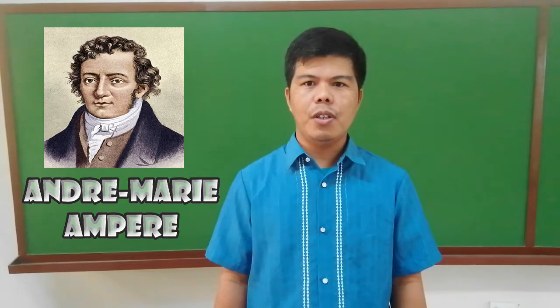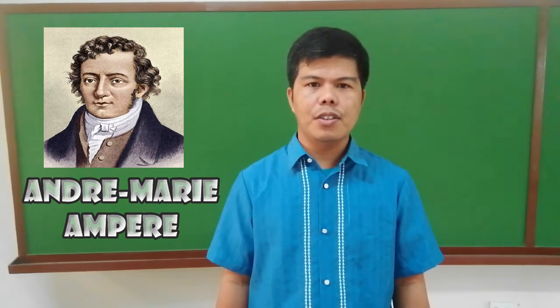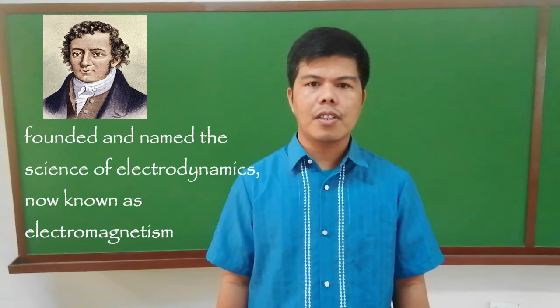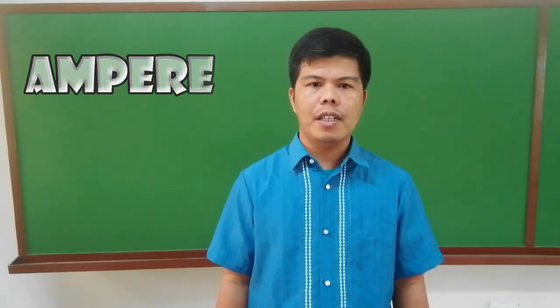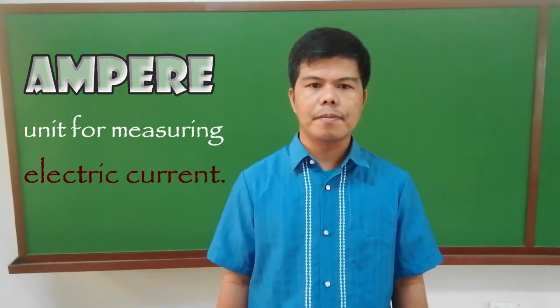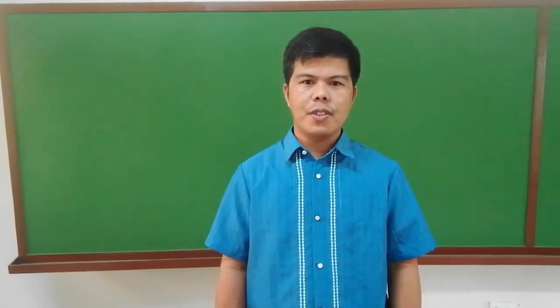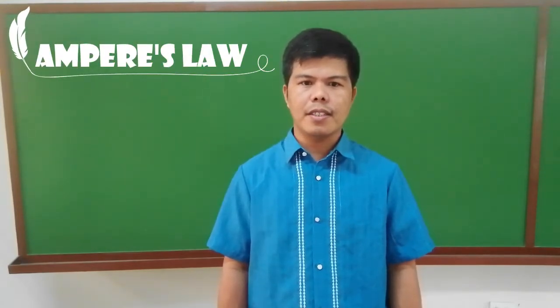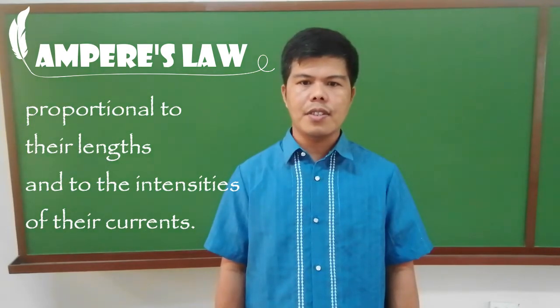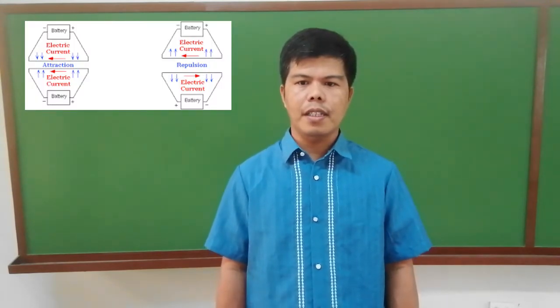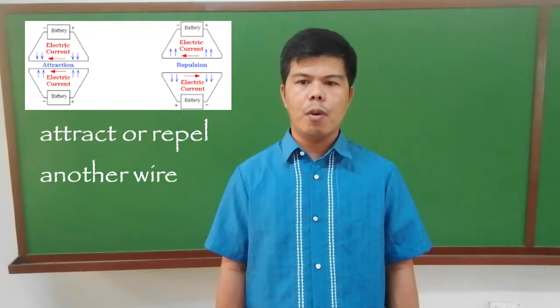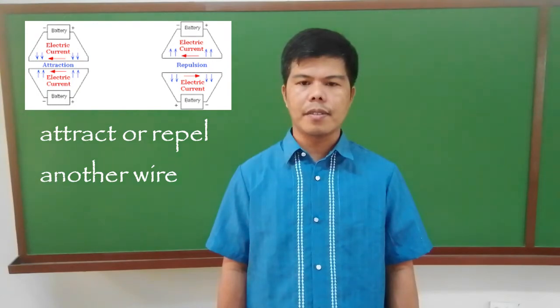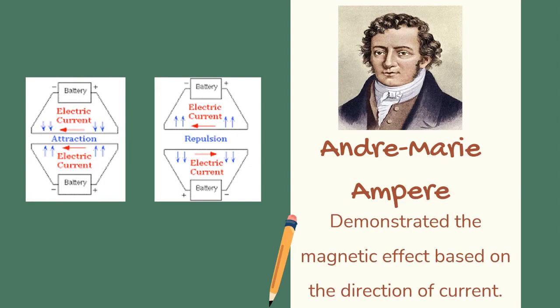André-Marie Ampère, born January 20, 1775, died June 10, 1836 — a French physicist who founded and named the science of electrodynamics, now known as electromagnetism. His name endures in the Ampere, the unit for measuring electric current. Most important was Ampère's law, which states that the mutual action of two lengths of current-carrying wire is proportional to the lengths and to the intensities of their currents. He made the revolutionary discovery that a wire carrying electric current can attract or repel another wire also carrying electric current, and demonstrated the magnetic effect based on the direction of the current.